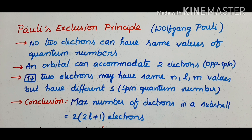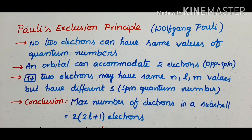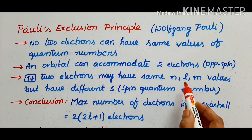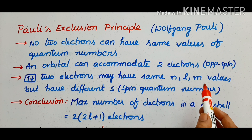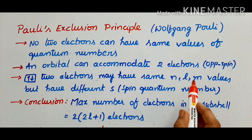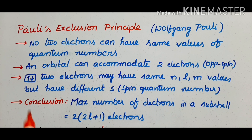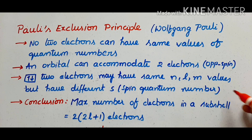In this statement, an orbital can accommodate two electrons. Two electrons in the same orbital may have the same n, l, and m values — that is, the principal quantum number, azimuthal quantum number, and magnetic quantum number — but they must be different in spin quantum number. The two electrons must have opposite spins.